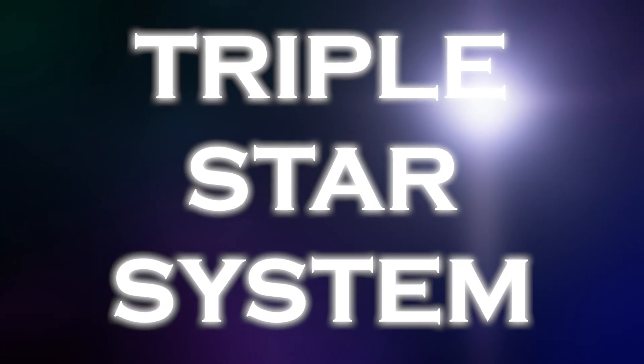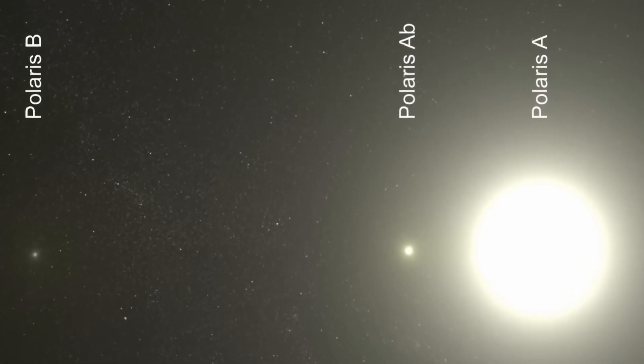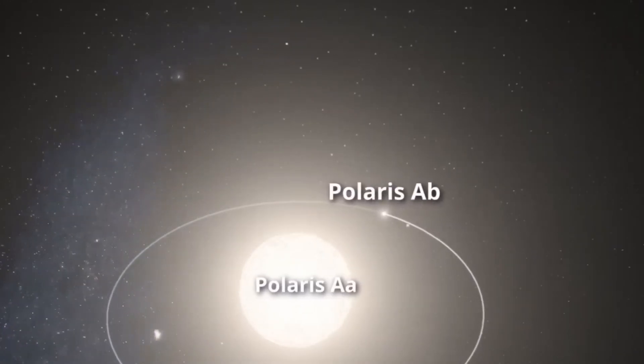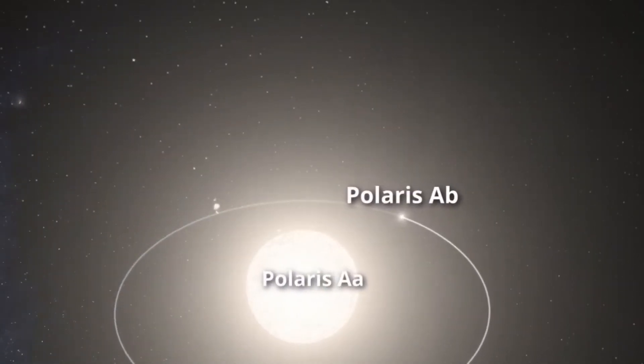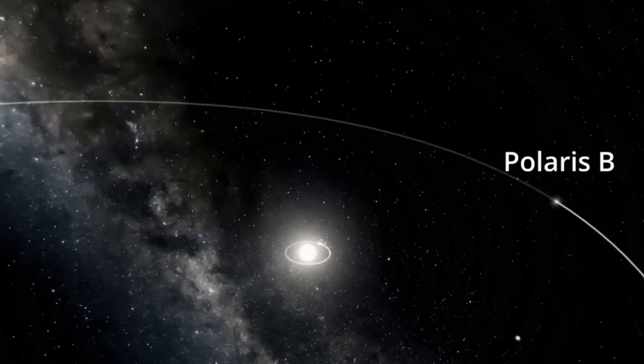Despite its appearance as a lone star, it is actually part of a rather complex triple star system. Within this system, the primary stars are Polaris AA and Polaris AB, which when seen with the naked eye, look like a single star.